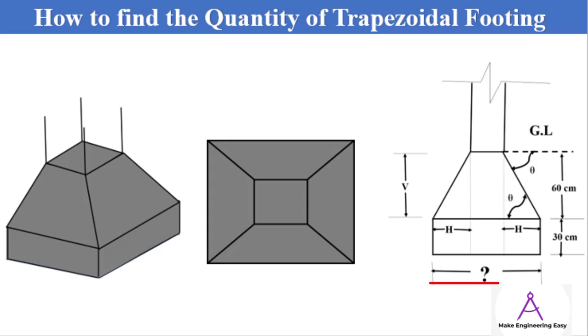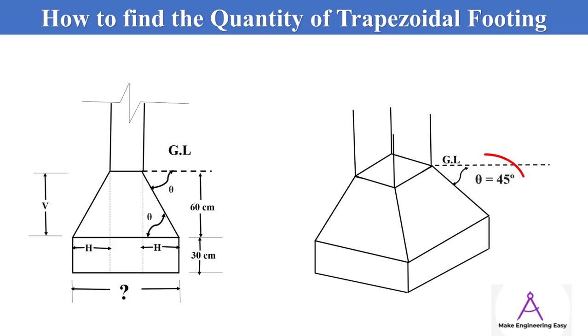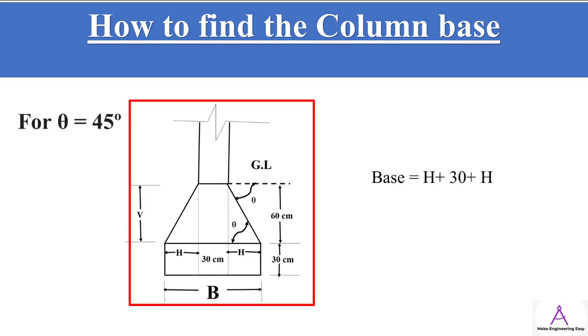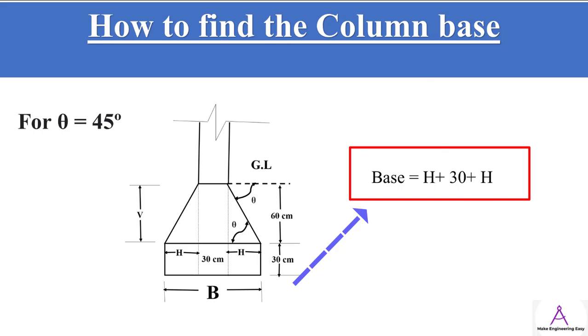But now the question is how to find out the base of the footing. Suppose if we have theta equal to 45 degrees, then how to calculate the base of the footing? For this case, consider the section or elevation view of the footing. Here the base of the triangle is denoted by H. So the total base will be equal to H plus 30 plus H.